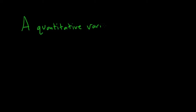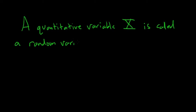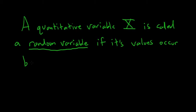So a quantitative variable, let's call it capital X, is called a random variable if its values occur by chance or random outcome.